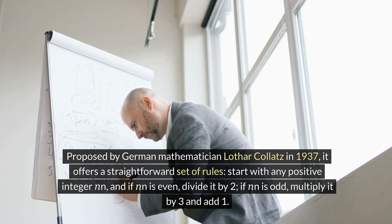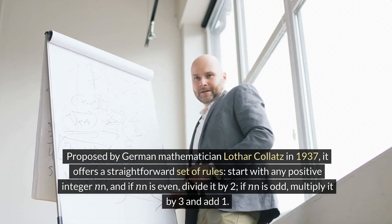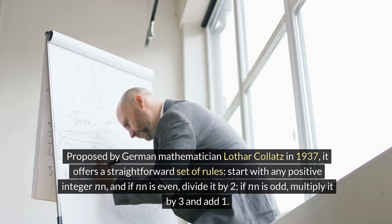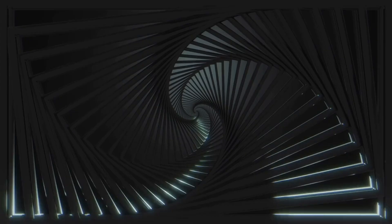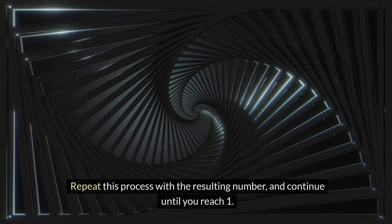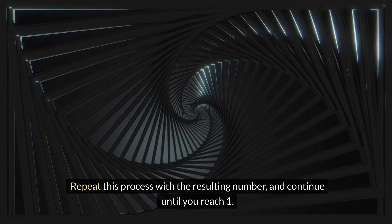Start with any positive integer n, and if n is even, divide it by 2. If n is odd, multiply it by 3 and add 1. Repeat this process with the resulting number and continue until you reach 1.